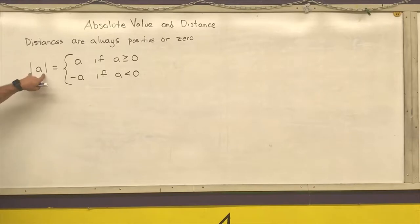If it's a positive number or zero, I can just get rid of the absolute value symbol. And if it is a negative number, I give its opposite, which turns it into a positive number.